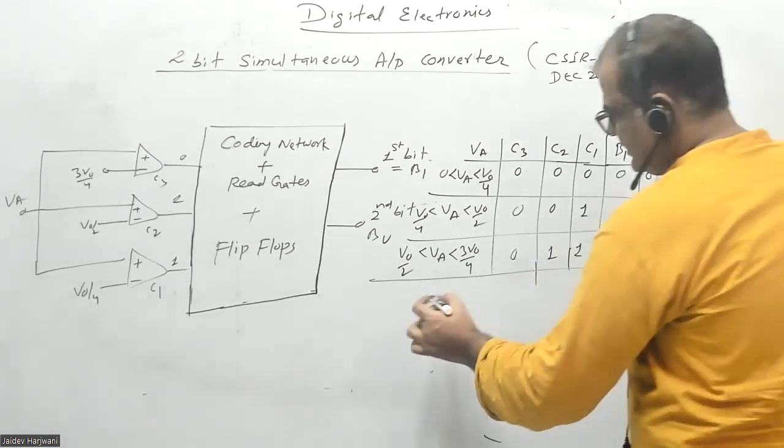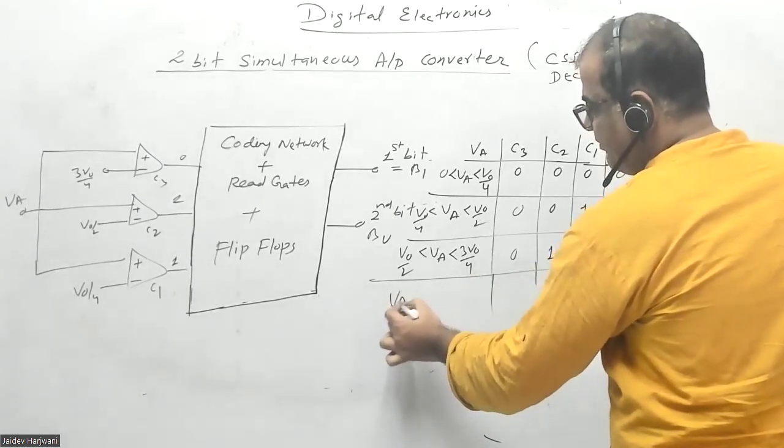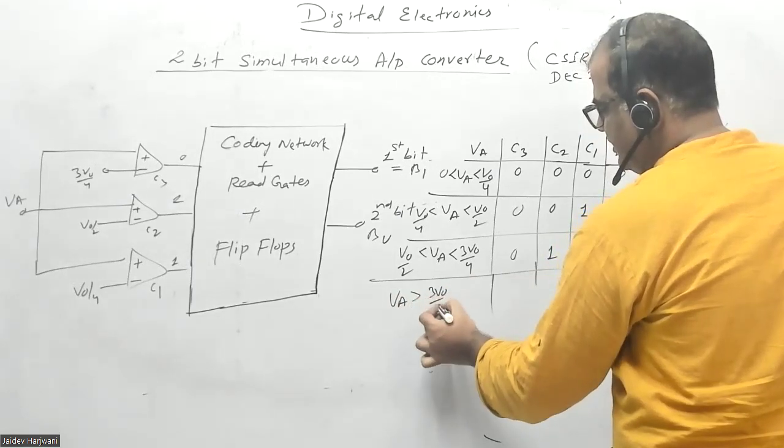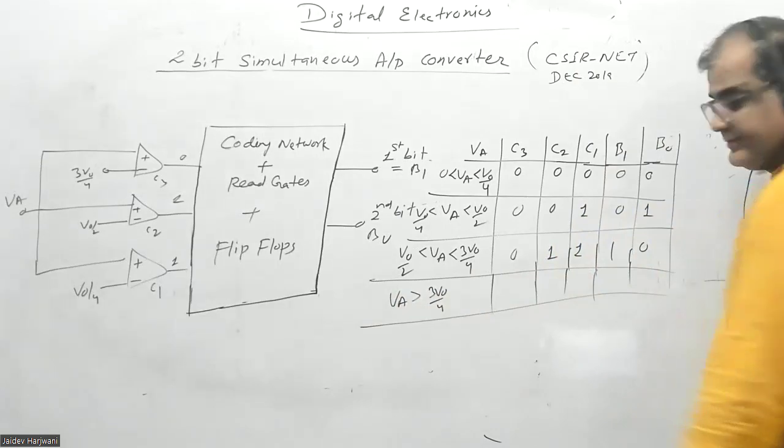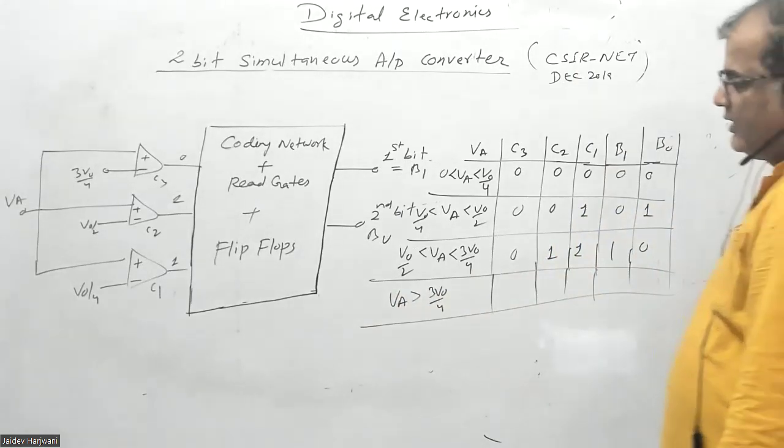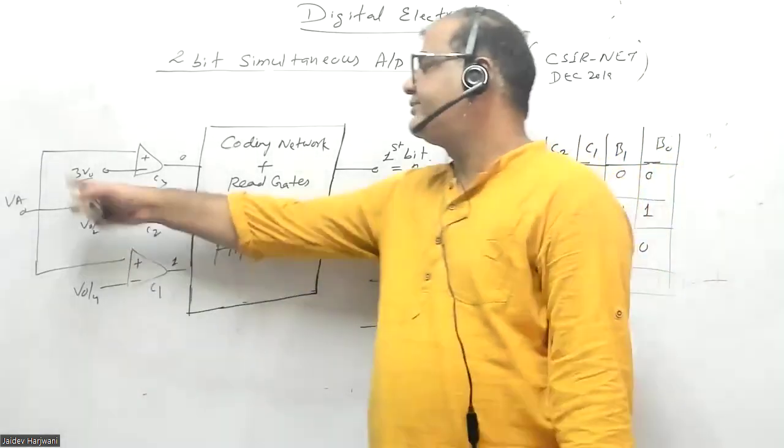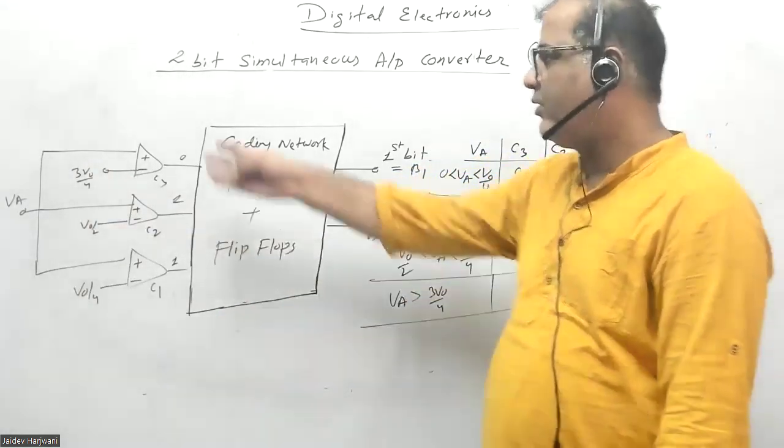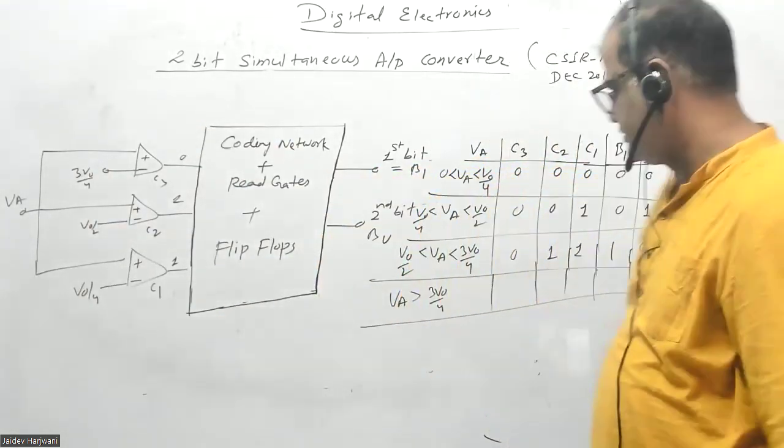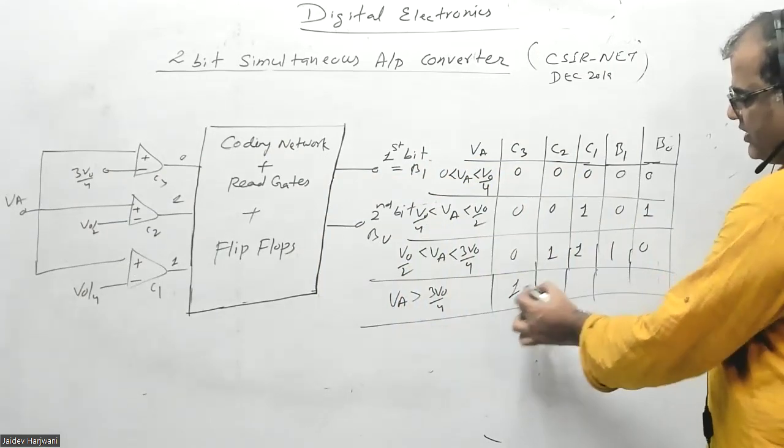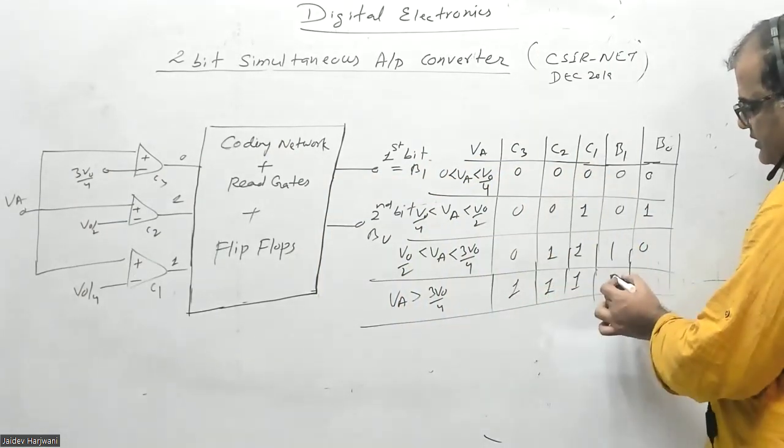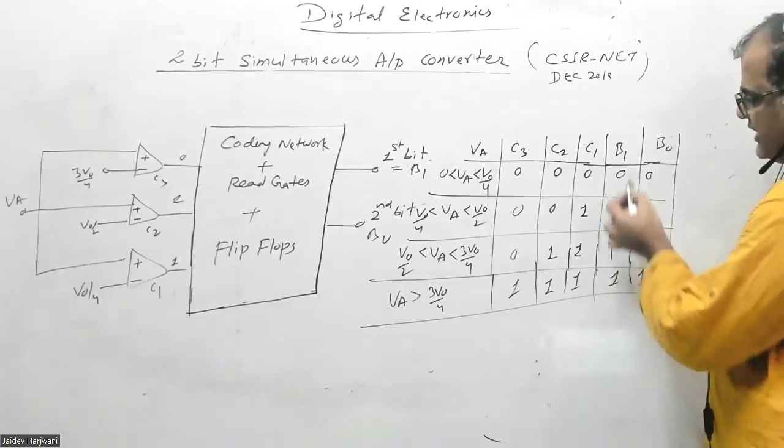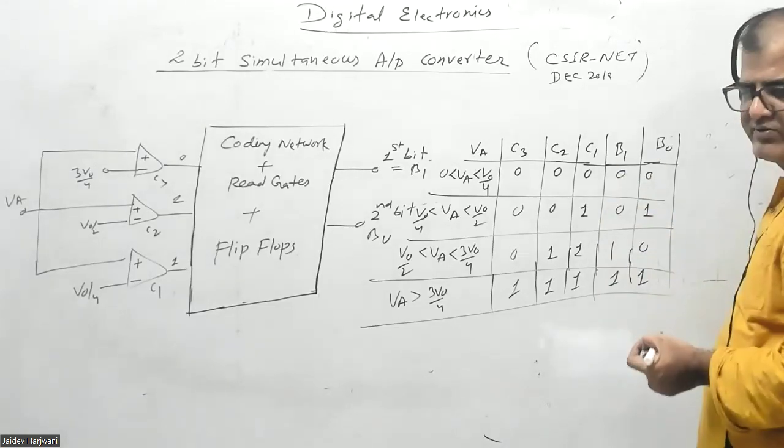The last case is when VA is greater than 3V0/4. The analog input is higher than all three reference voltages, so this gives 111. I can code this as 11 because I have only two bits, so only four options: 0, 1, 2, 3.